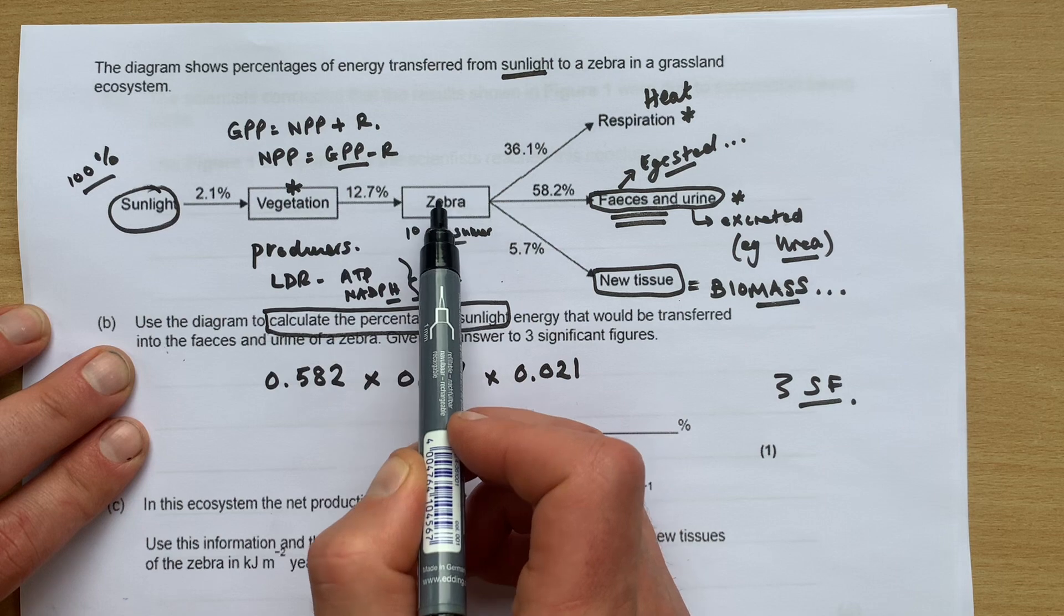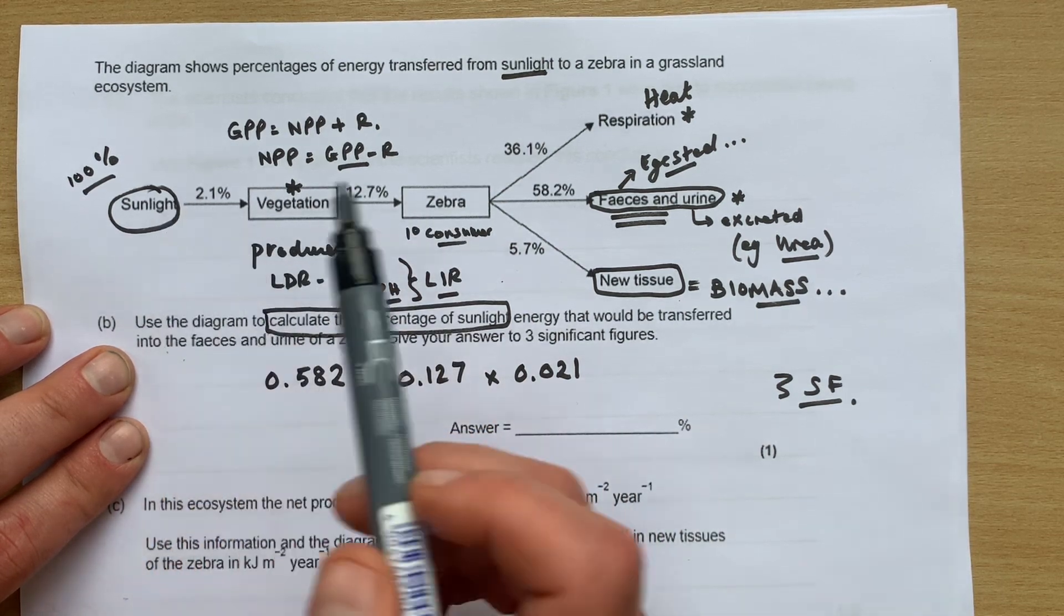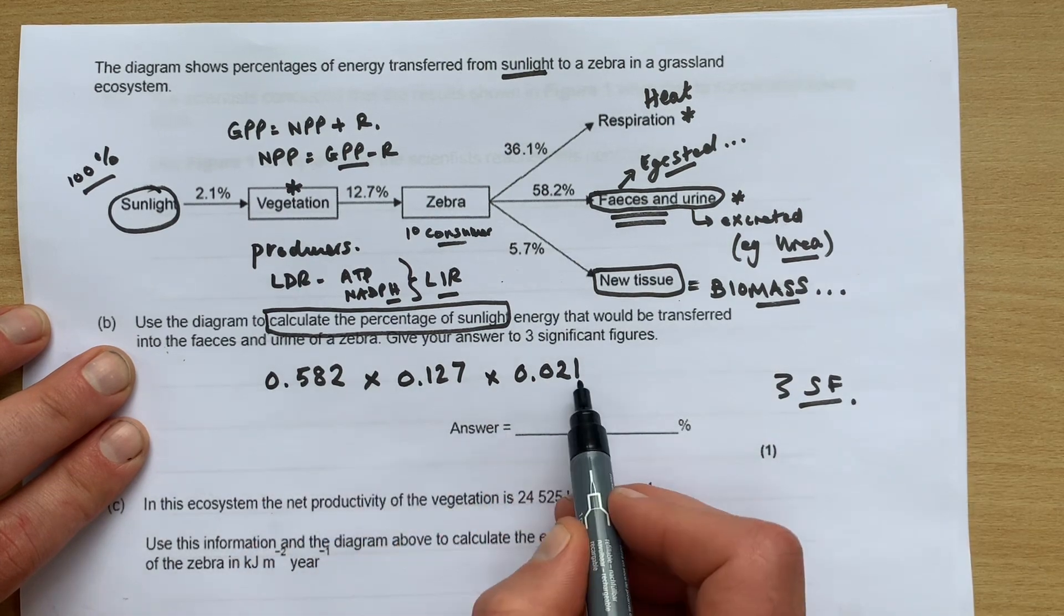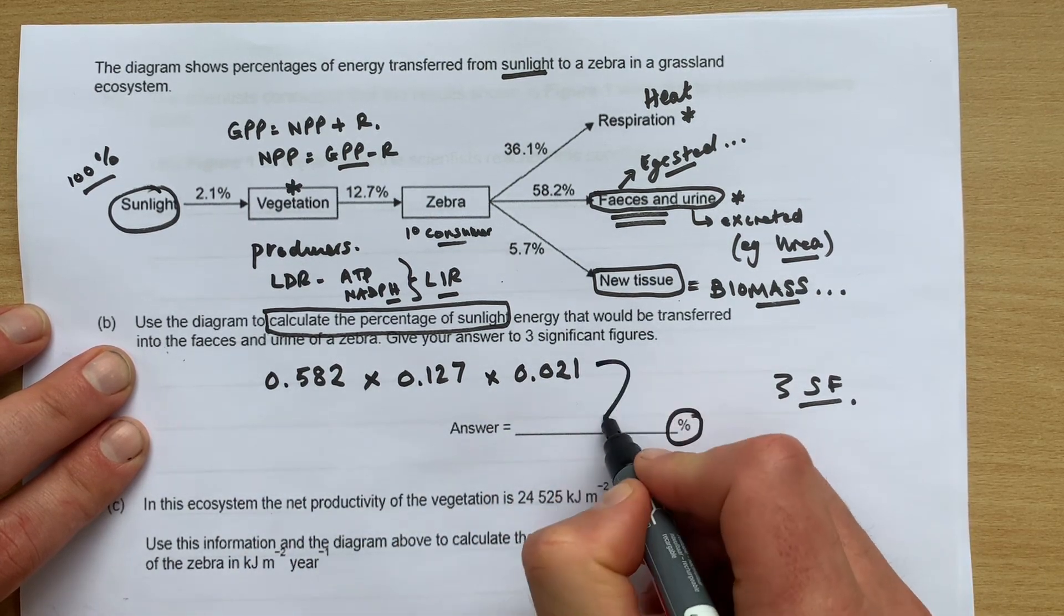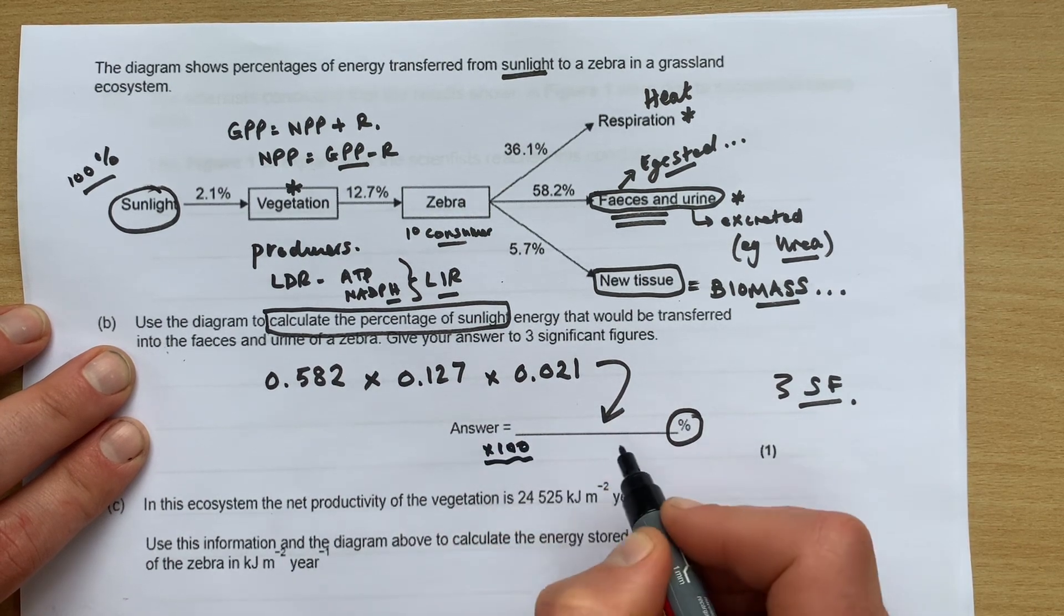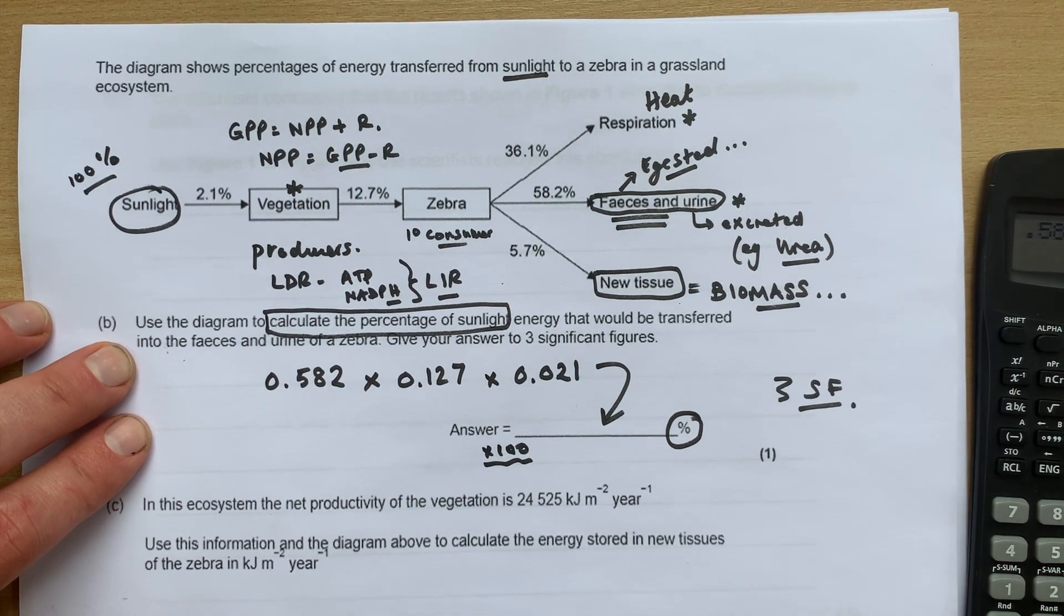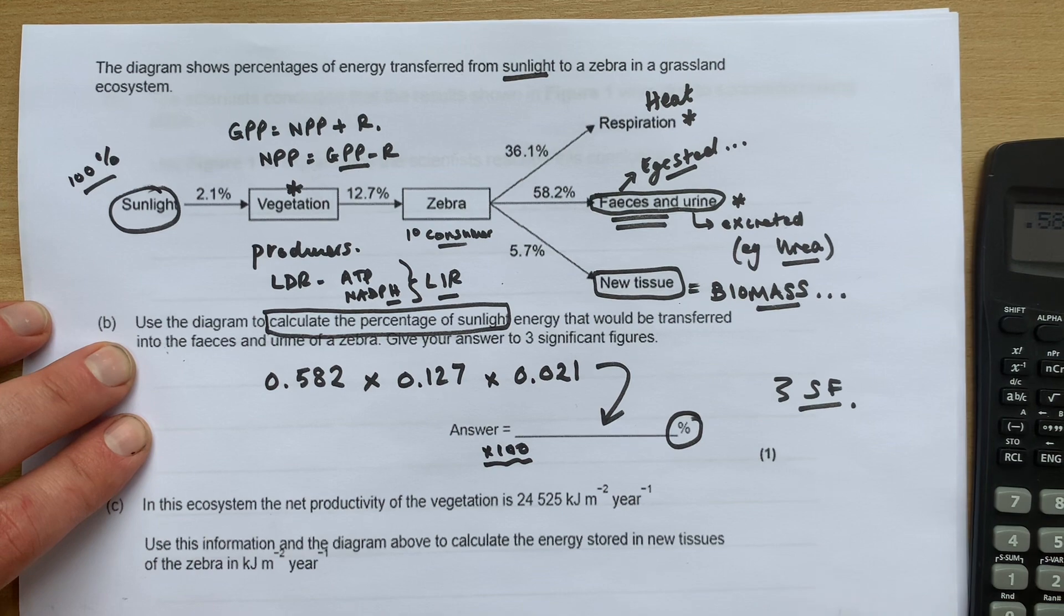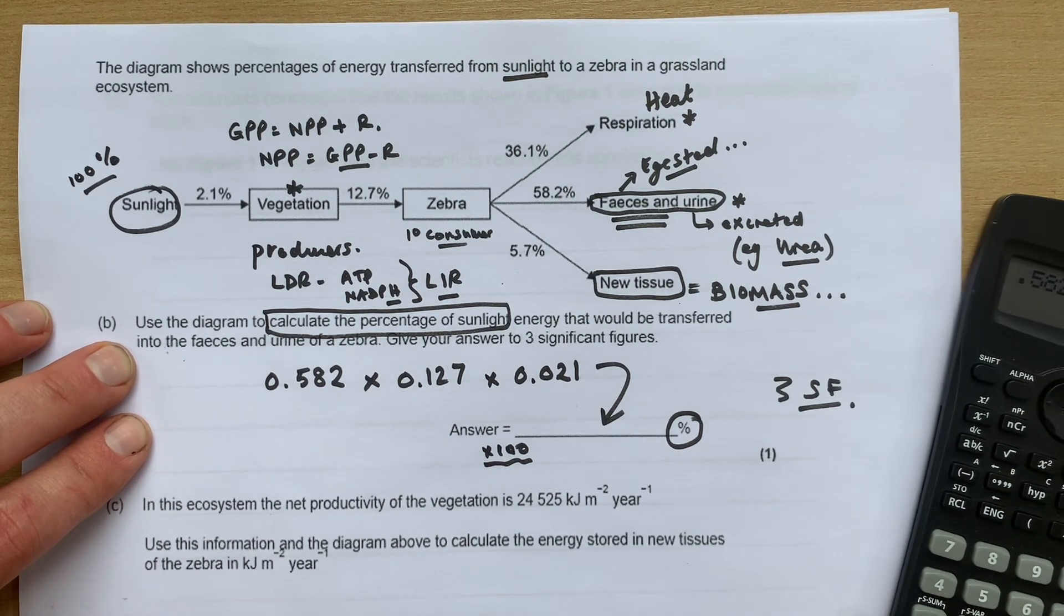That was 12.7 percent of the energy in the vegetation, which is 2.1 percent of the total sunlight. So you could times these, and then it wants the percentage, so you're going to times by 100 to get your value. So 0.582 times 0.127 times 0.021, and that gives us a value that you can put in there.